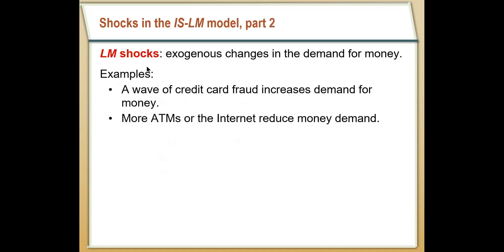On the other hand, we can have LM shocks. An LM shock is an exogenous change in the way people hold money versus the way people spend money. An example could be people wanting to get away from credit cards and back into cash because of credit card fraud, or easier availability of cash alternatives — more ATMs around, or people switching to Venmo. All of that presents itself as an LM shock in the ISLM model.